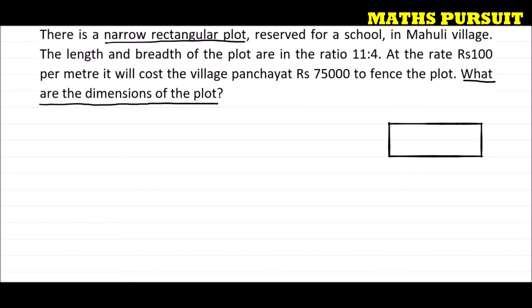I have drawn a rectangle — this is the narrow rectangular plot. Let the length be L and breadth be B. The rectangular field's length is L and breadth is B. The question tells us the length and breadth are in the ratio 11 is to 4.